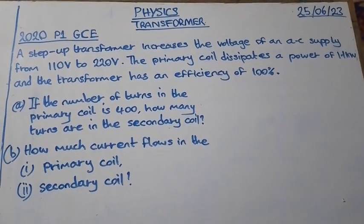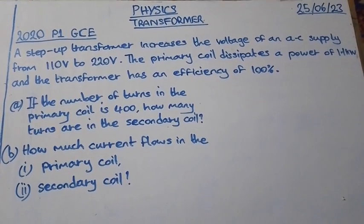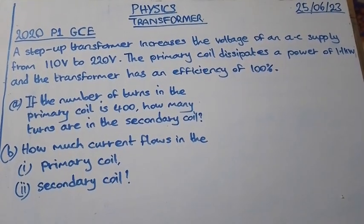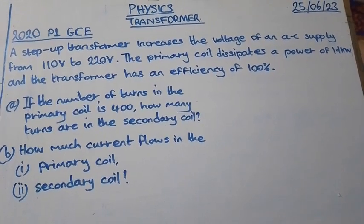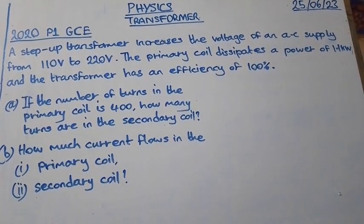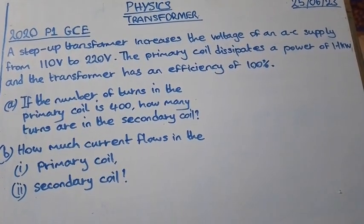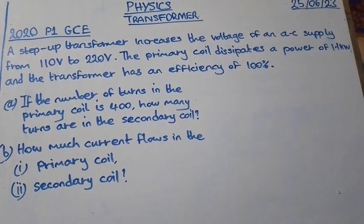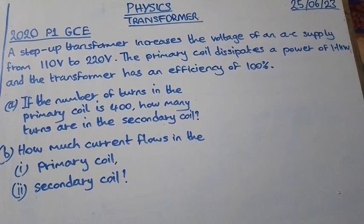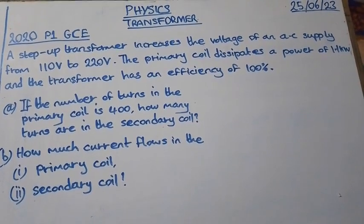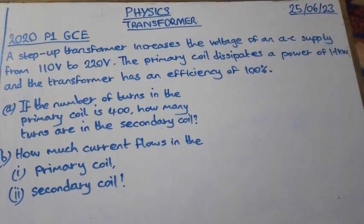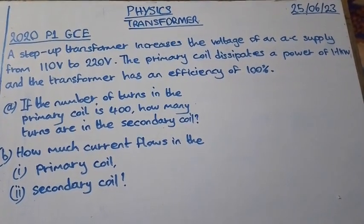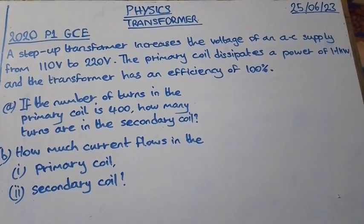2020 paper 1 GCE. The question on transformer goes as follows: A step-up transformer increases the voltage of an AC supply from 110 volts to 220 volts. The primary coil dissipates a power of 1.1 kilowatts and the transformer has an efficiency of 100%.